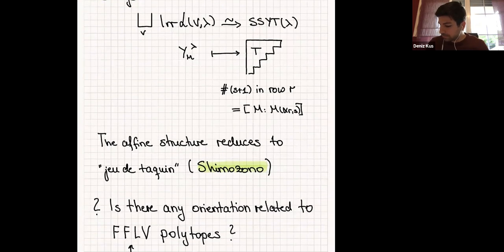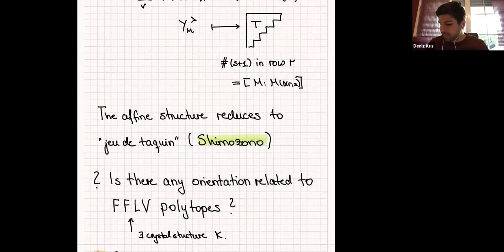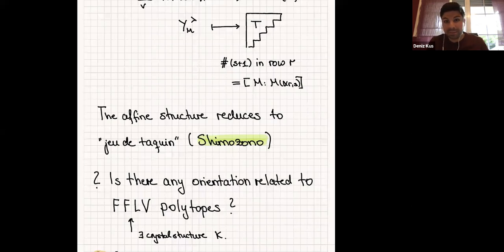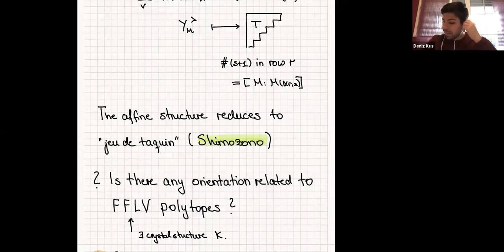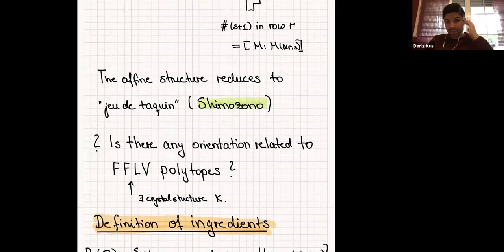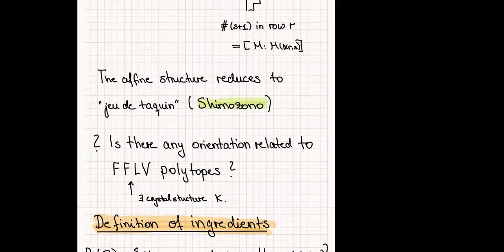Now I want to come back to the definition of the ingredients. I want to define F_i^∨ and F_i. What is P_i(Q)? Now everything goes back to the Auslander-Reiten quiver. P_i(Q) is the collection of all indecomposable representations M such that there is a non-zero map between M and S_i, from M to S_i. P_i^∨(Q) is the same but switching: you look for non-zero homomorphisms from S_i to M.